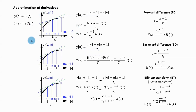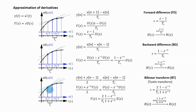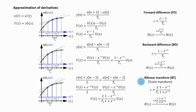These approximations result in some error — the forward difference gives an approximated derivative smaller than the true one, and the backward difference gives one larger than the true one. To improve precision, I can use the slope of the line passing through the points at n-1 and n+1 to estimate the average of the derivatives at those points. This approximation we call the bilinear transform, or sometimes the Tustin transform.